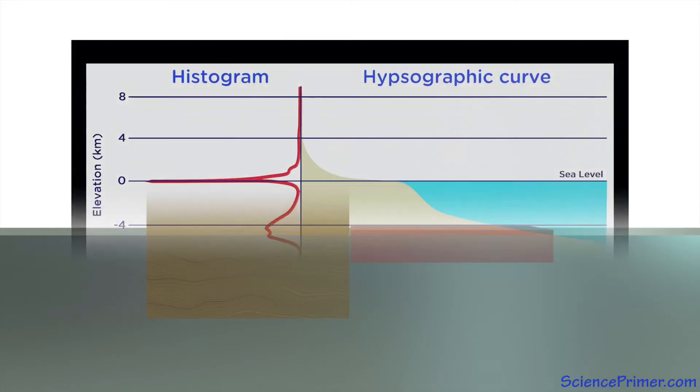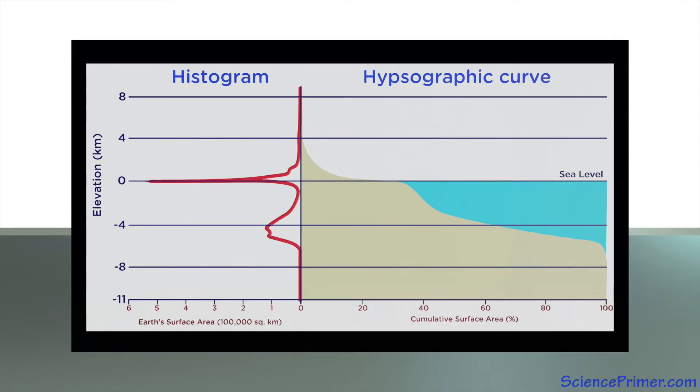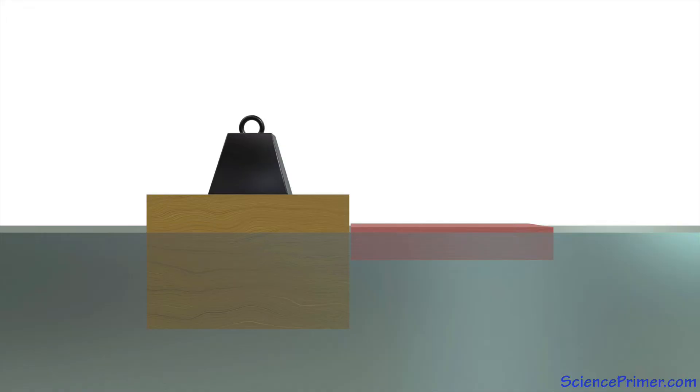The bimodal distribution of elevations along the earth's surface is due to these differences between oceanic and continental crust. The higher peak is the average depth of the thicker, less dense continental crust. The lower peak is the average for the thinner, denser oceanic crust. If weight is added, pressure increases below the block, and water flows away until the pressure equalizes.